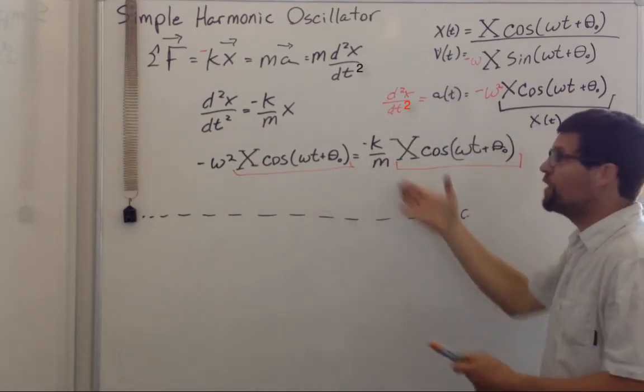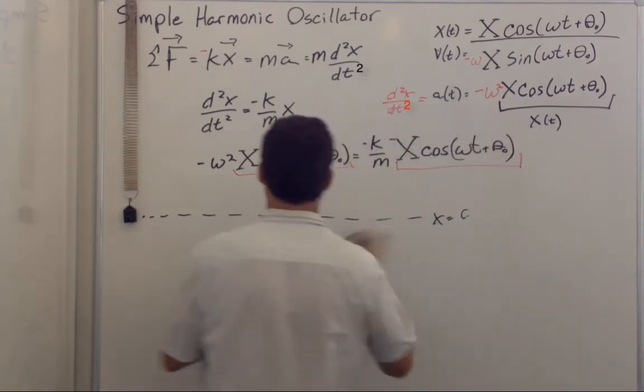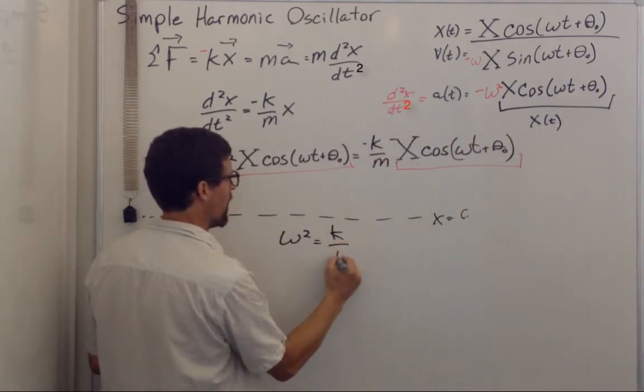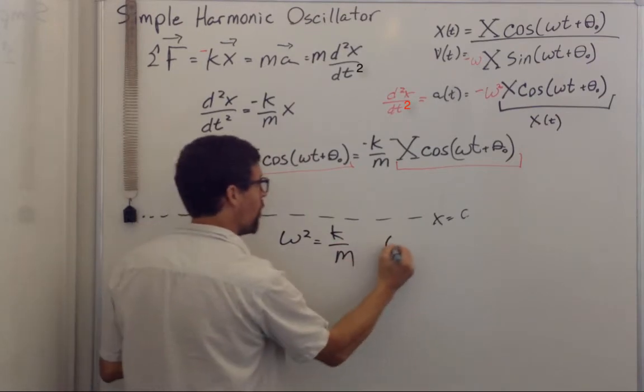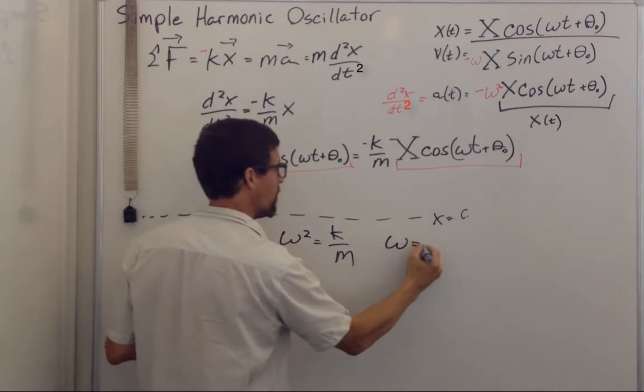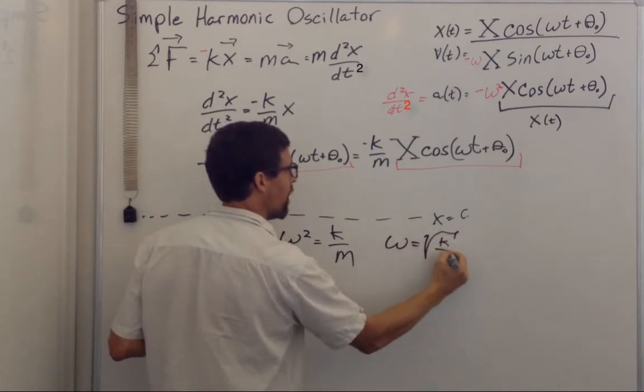Acceleration is the second time derivative of x. So I can put this in. Then we can see these two cancel. And this will be true if and only if omega squared is equal to k over m.